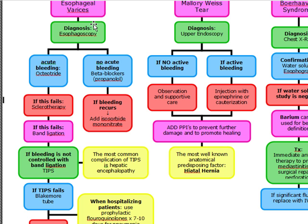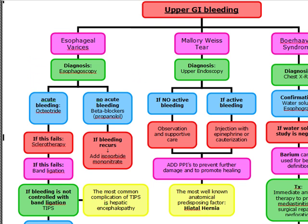If the varices have been diagnosed but there is no acute bleeding, we can give beta blockers — propranolol is our drug of choice. If the patient is on a beta blocker and bleeding recurs, we add isosorbide mononitrate.